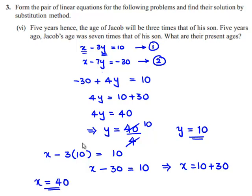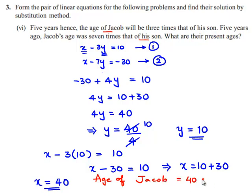x is the age of Jacob and y is the age of his son. Therefore, the age of Jacob is equal to 40 years and the age of his son is equal to 10 years.